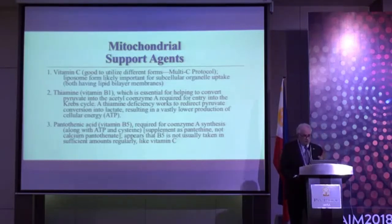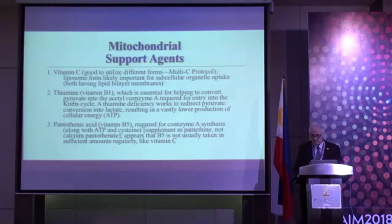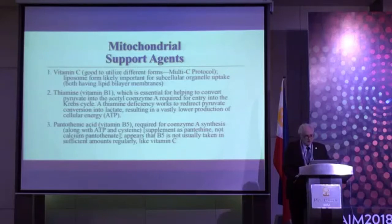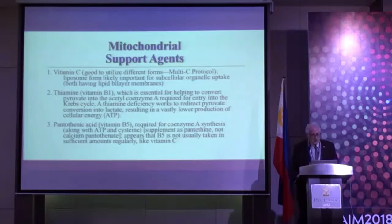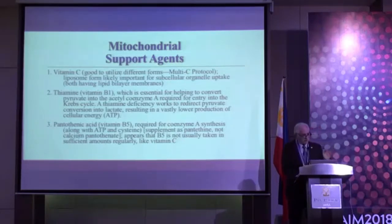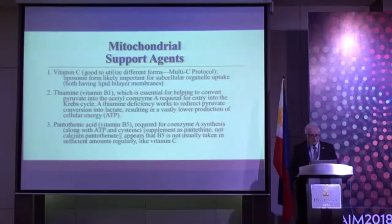Pantothenic acid is very under-emphasized. Without pantothenic acid you can't synthesize coenzyme A — the other two components of which are ATP and cysteine — and it is absolutely essential for the Krebs cycle in generating energy.